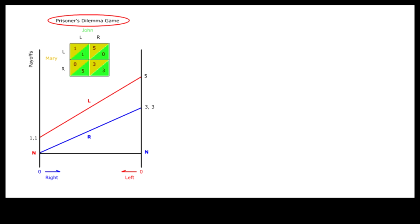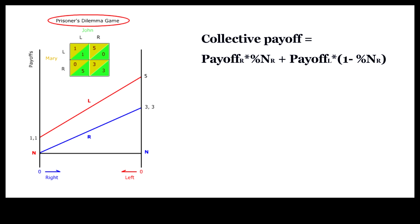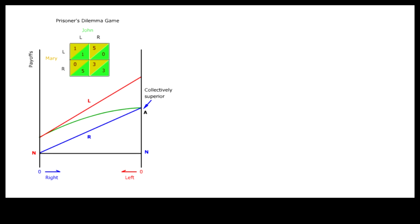The collective payoff is simply the payoff for L, weighted by the percentage of people choosing L, plus the payoff for R weighted by the percentage of people choosing R. This collective payoff curve clearly shows that everybody choosing R at A is collectively superior. But because L is the dominant strategy, everybody ends up choosing L at B. This is of course the classic prisoner's dilemma game.